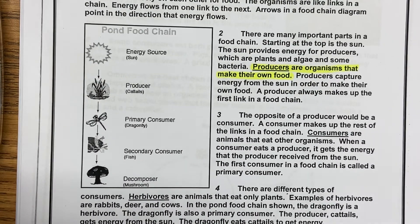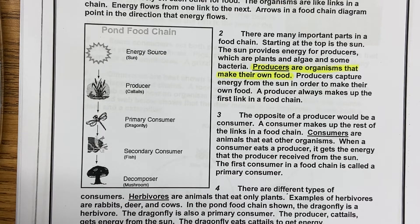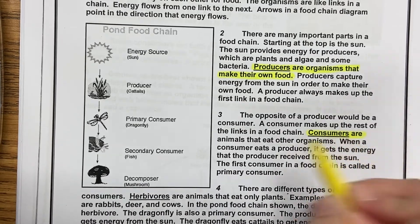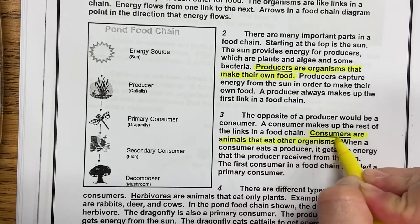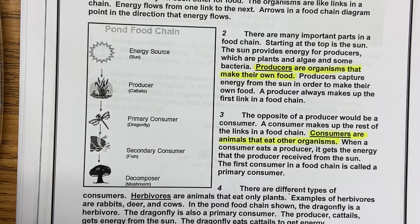Paragraph three: The opposite of a producer would be a consumer. A consumer makes up the rest of the links in a food chain. Consumers are animals that eat other organisms. When a consumer eats a producer, it gets the energy that the producer received from the Sun. The first consumer in a food chain is called a primary consumer. So we're going to highlight: consumers are animals that eat other organisms. I'm having you highlight the vocabulary because later there are questions about all of the vocabulary words and that will help you get back to them quicker.